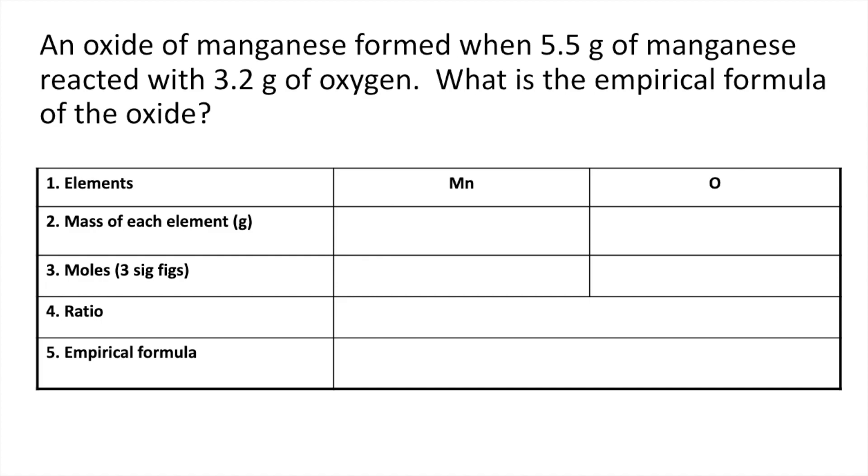This one here you've got an oxide of manganese and we've got the masses of manganese and oxygen. What's the empirical formula? So mass of each type of element goes in there. The moles to three significant figures calculated by dividing the mass by the relative atomic mass. So we get 0.100 and 0.200.